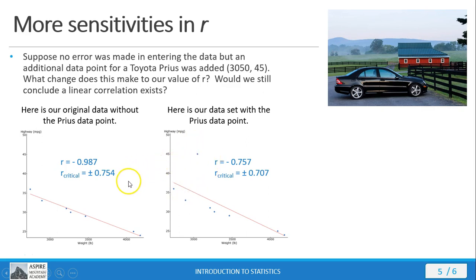Now notice the R value from our data set has gone down because now with the outlier the line of best fit doesn't fit all the data points as well. Our critical R values change as well because they depend on sample size, and by adding another data point we change the size of our sample, so now we have new critical R values.